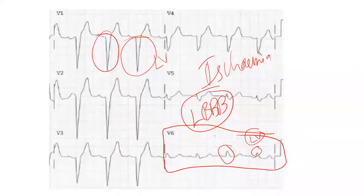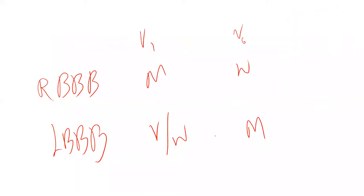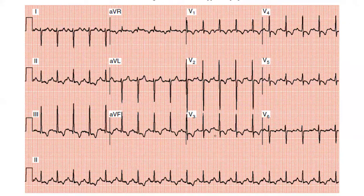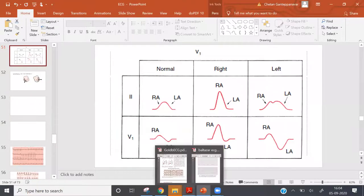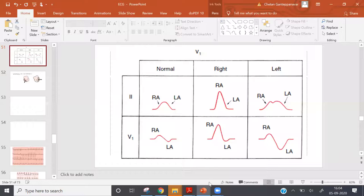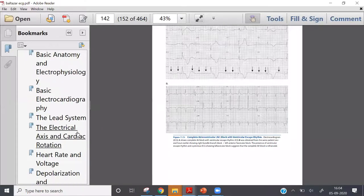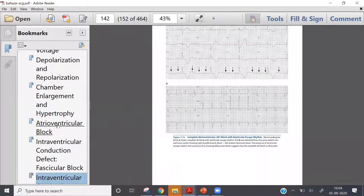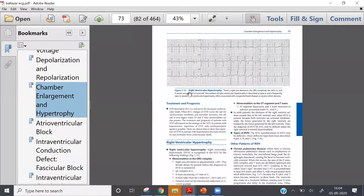That is enough for LBBB and RBBB today. Some additional ECGs can be shown for those interested — this is from a PG-level ECG book, which is very detailed. An ECG showing right ventricular hypertrophy is presented: V1 is very large and positive, V6 is negative, and there is ST depression in V1, V2, and V3. This is consistent with RVH.